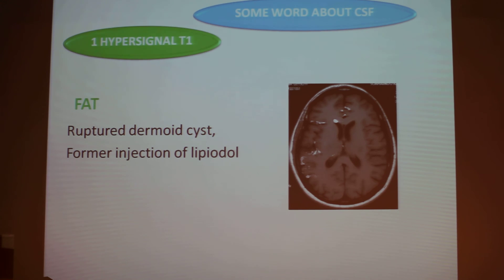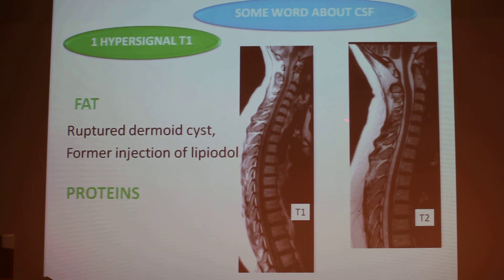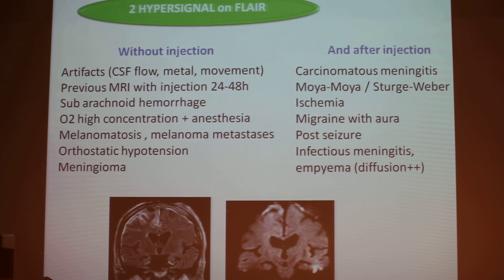And more and more seldom because we don't do this anymore — we used to inject Lipiodol, and Lipiodol is fat. Sometimes you can find old people with some drops of Lipiodol, especially as we used it to detect a schwannoma of the eighth cranial nerve. In old people you can still detect fat that is rare. And proteins: this is a patient with a sarcoid disease. On T1 and T2 you can see there is nearly no difference because the protein level is so high that the CSF is bright on T1. And when you have this hyper-signal on FLAIR, there is blood, there is fat, but there are many occasions to see this hyper-signal such as artifacts. When you have an MRI, the gadolinium will go to the CSF one to two days after the injection.